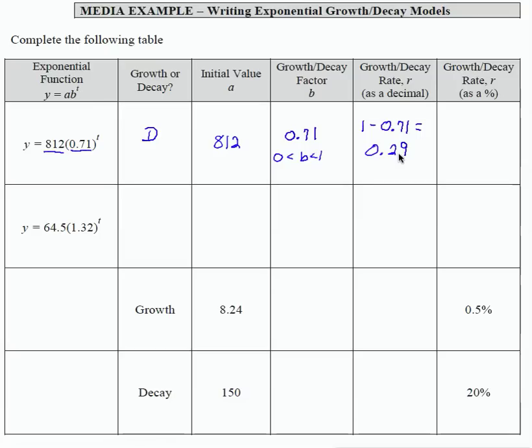To make that into a percent, I need to move the decimal to the right two places. This is 29%. So this equation represents an equation that has a 29% rate of decay.